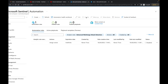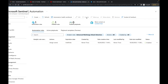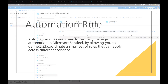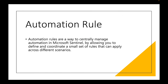Right now it's disabled. Clicking back on it lets you re-enable that same rule, and if you want to get rid of the rule entirely you can delete it as well. As a quick recap: automation rules are a way to manage automation in Microsoft Sentinel by allowing you to define and coordinate a small set of rules that can apply across different scenarios.